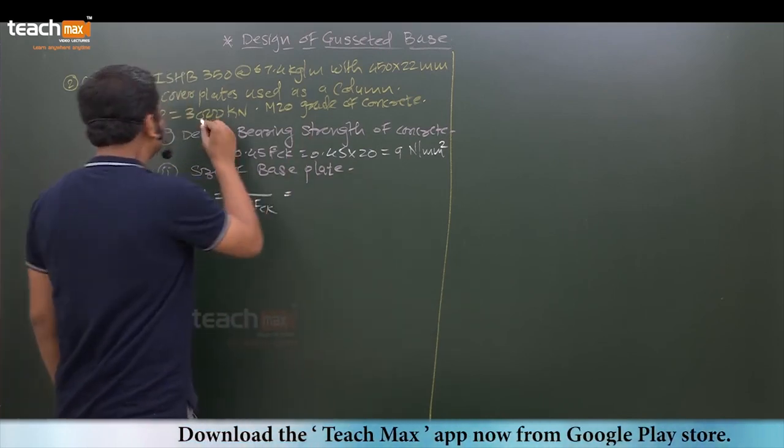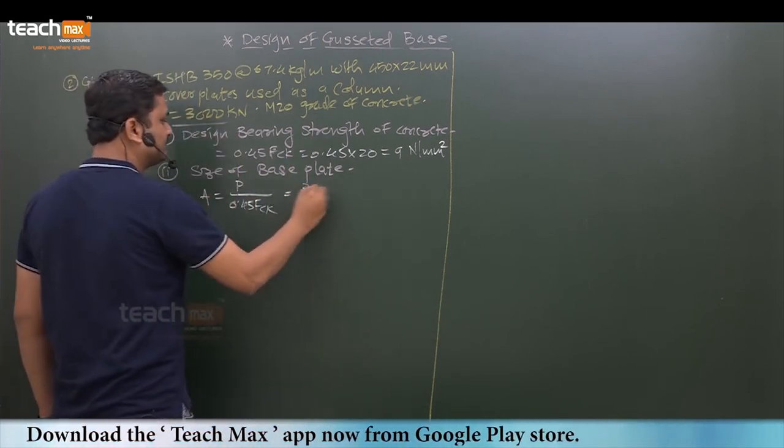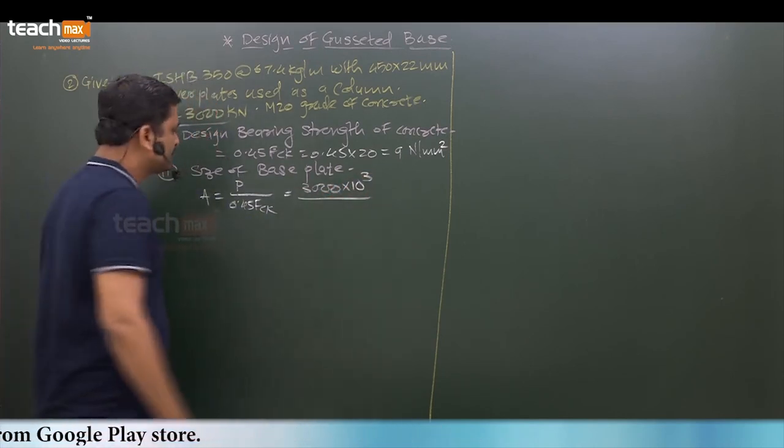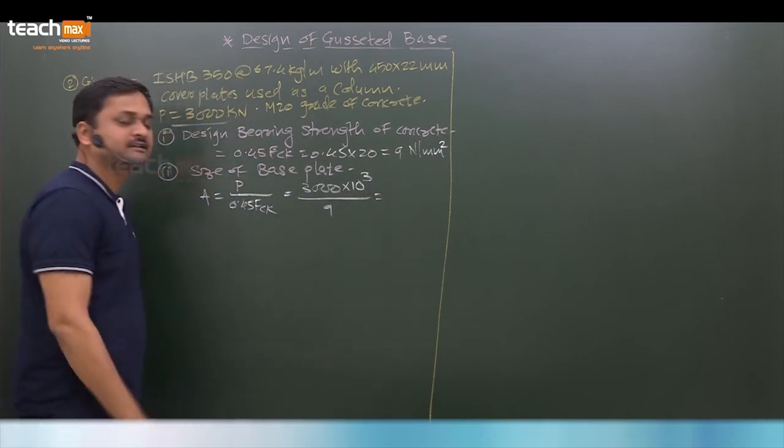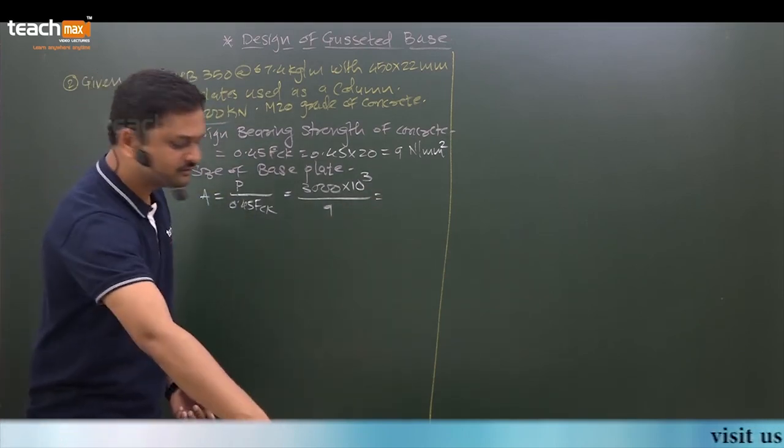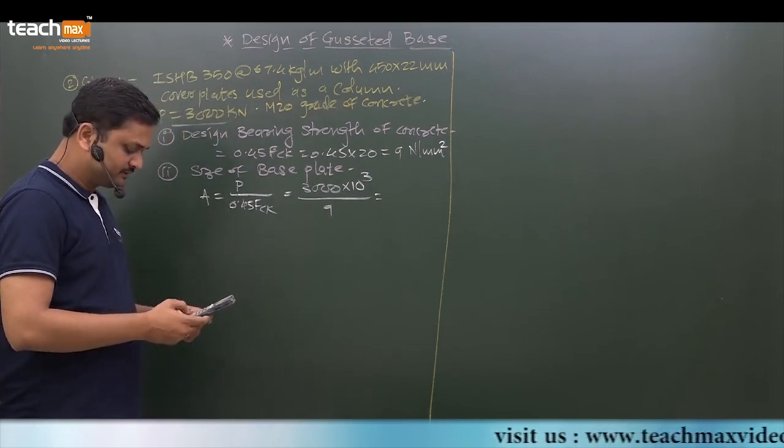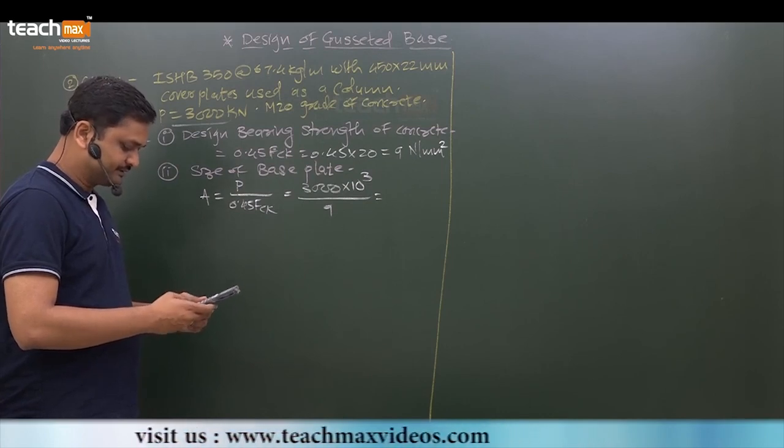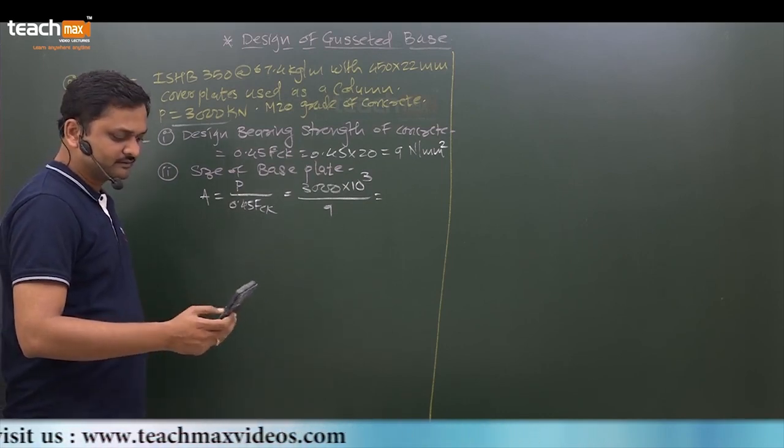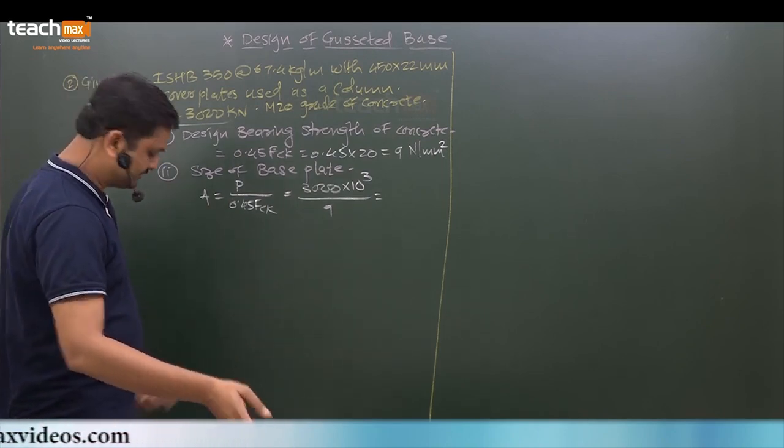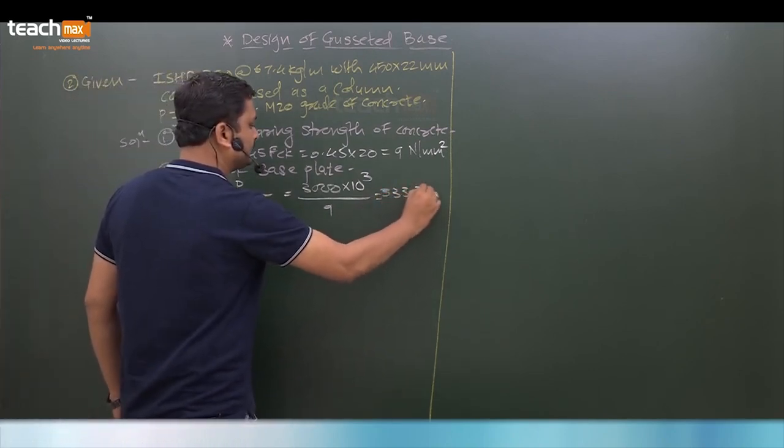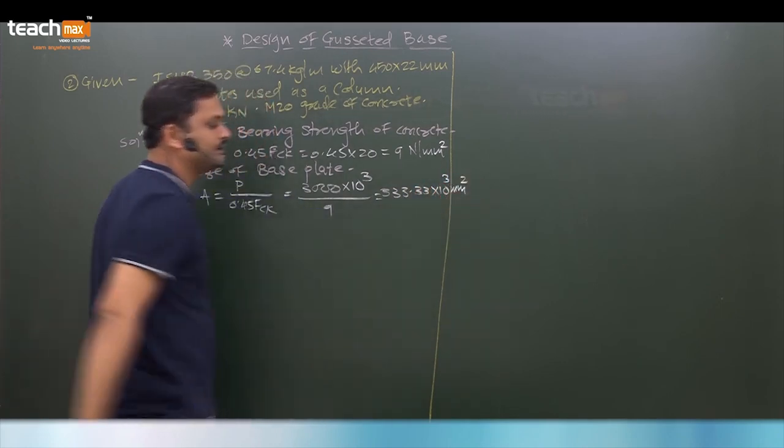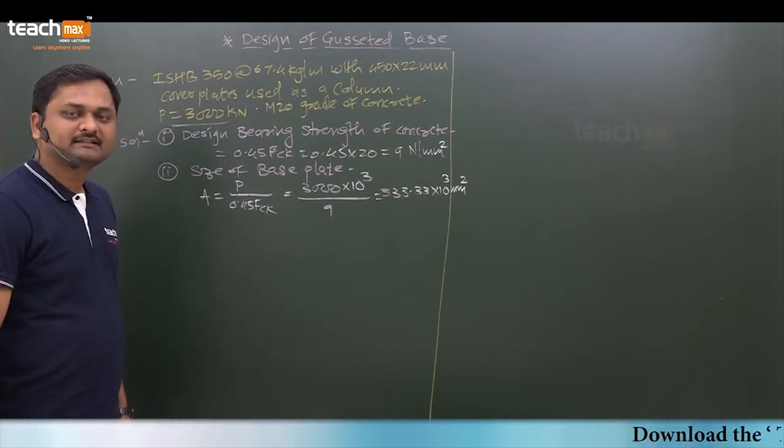Just put the value: P factored axial compression is directly given. 3000 into 10 raise to 3 Newton divided by 9. This gives the area required. Put the value in calculator and find out. Very simple examples are asked for 10 marks. This is required area: 333.33 into 10 raise to 3 mm square.